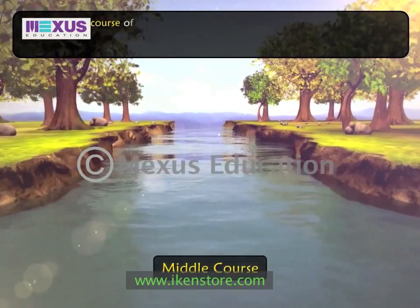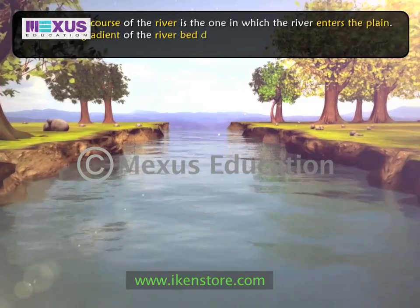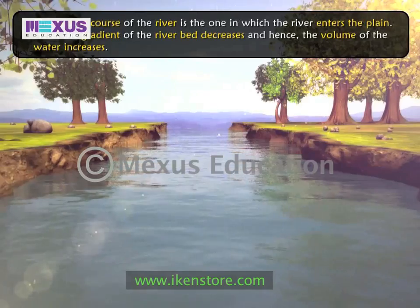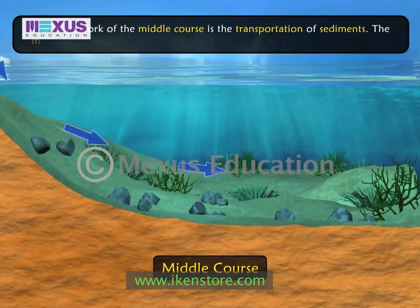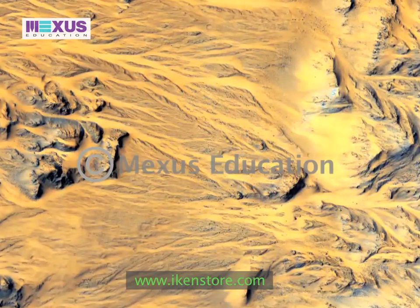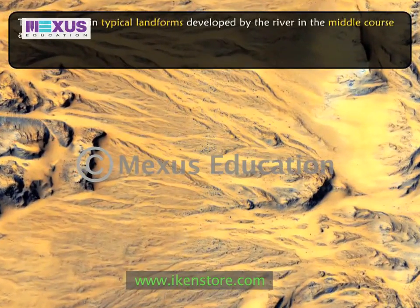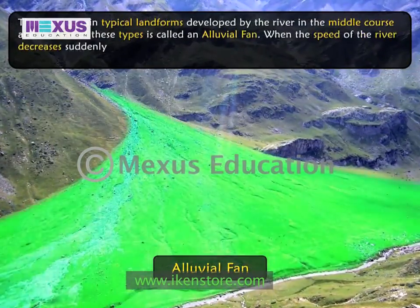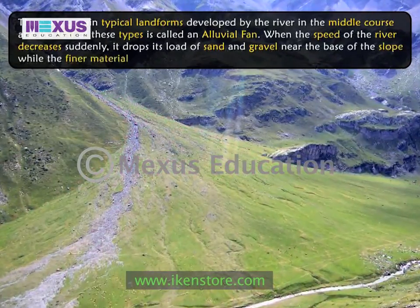The middle course of the river is where the river enters the plain. Here, the gradient of the river bed decreases and the volume of water increases. The main work of the middle course is the transportation of sediments, and it plays an important role in deposition as well. The first landform of the middle course is an alluvial fan. When the speed of the river decreases suddenly, it drops its load of sand and gravel near the base of the slope while the finer material is carried away.